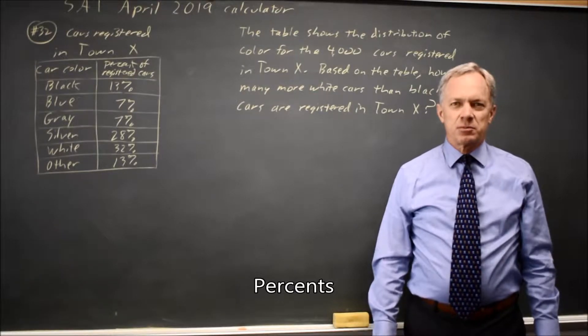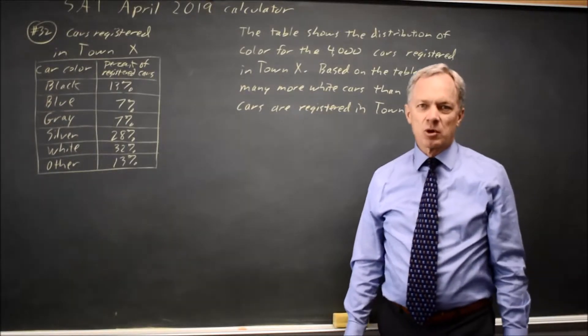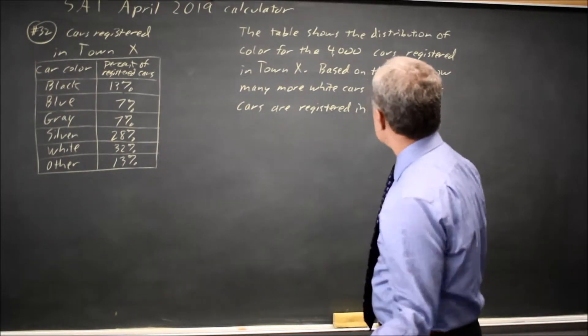This is calculator question number 32 from the April 2019 SAT. College Board describes the distribution of the colors of cars in a town and asks how many more white cars are there than black cars in this town.